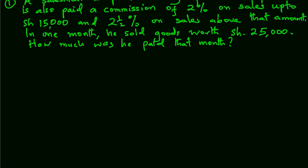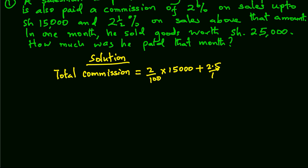In our solution, we begin by working out his total commission. Since there are two commissions here, the first one is 2% of 15,000 plus the second one is 2.5% of the excess or sales above 15,000.